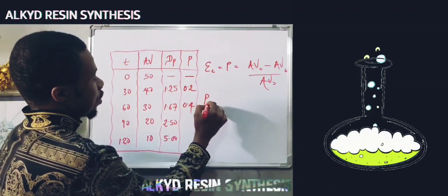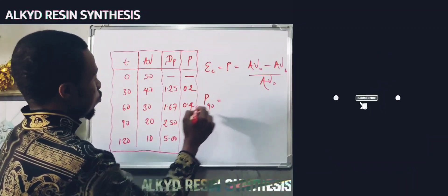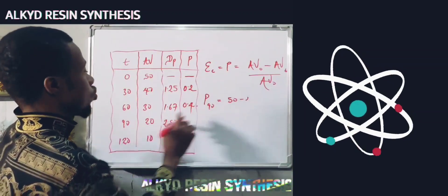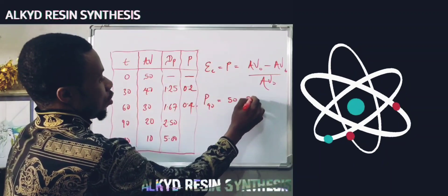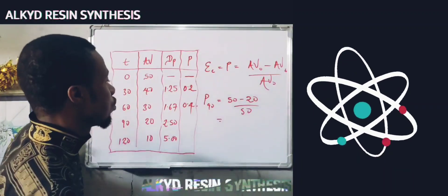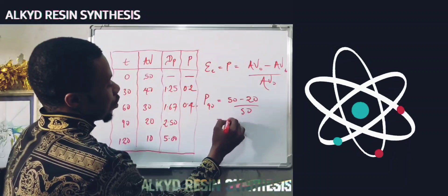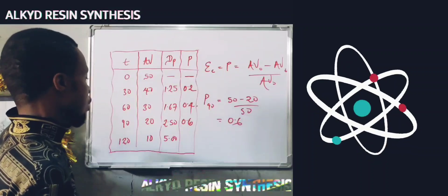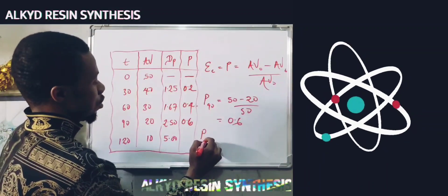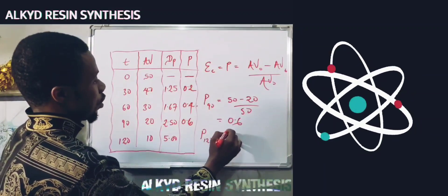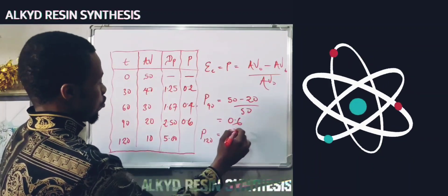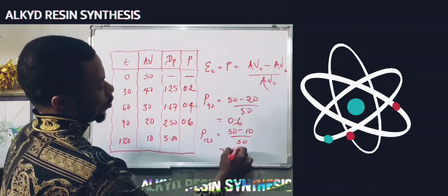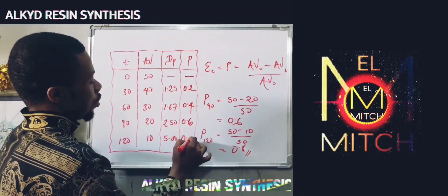At time 90 minutes, the extent of conversion equals (50 minus 20) divided by 50 = 30/50 = 0.6. At time 120 minutes, we have (50 minus 10) divided by 50, which gives 0.8. So the extent of conversion at 90 minutes is 0.6 and at 120 minutes is 0.8.